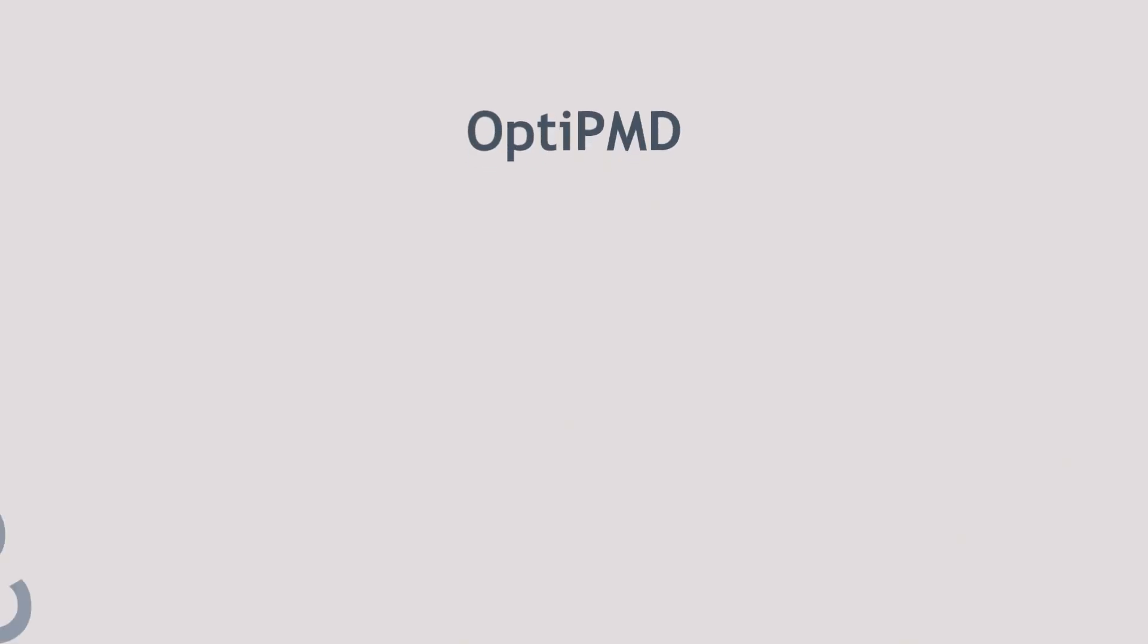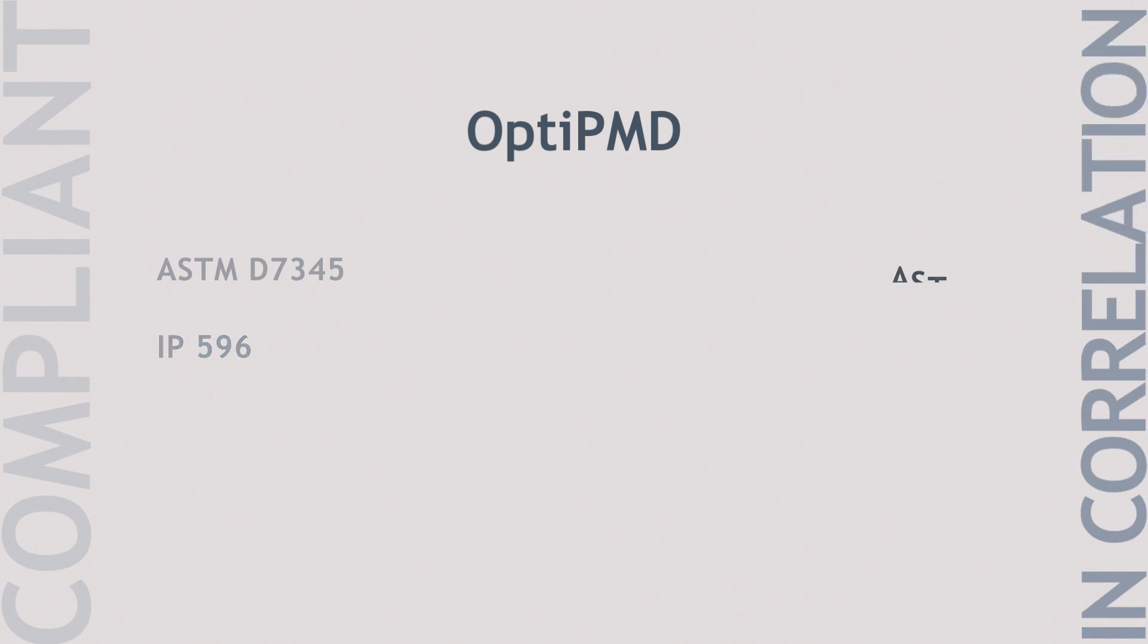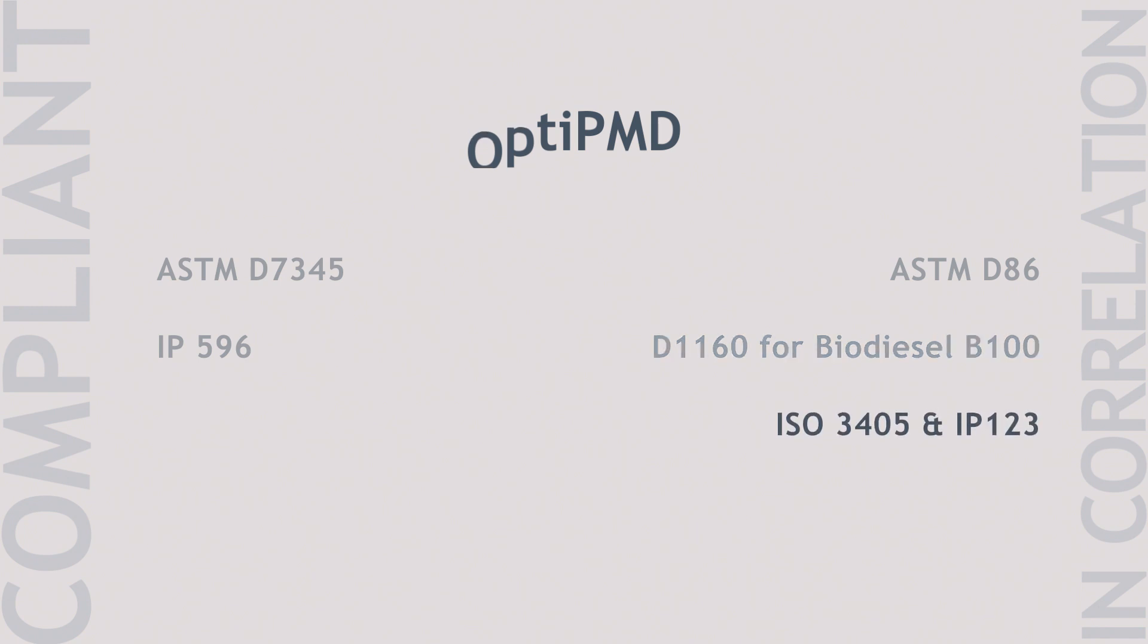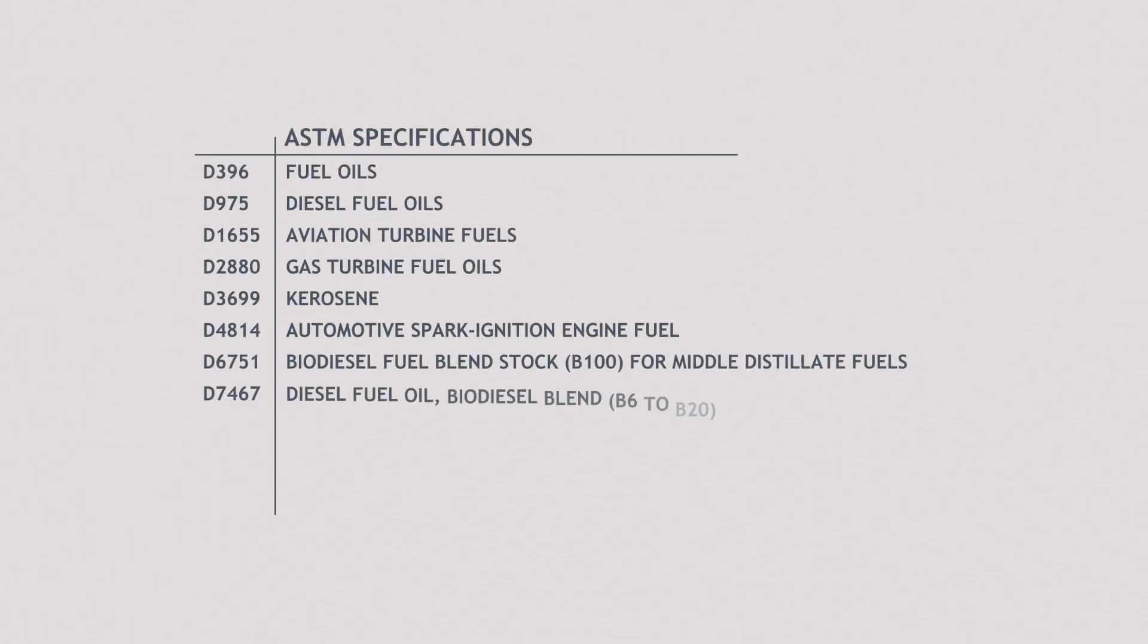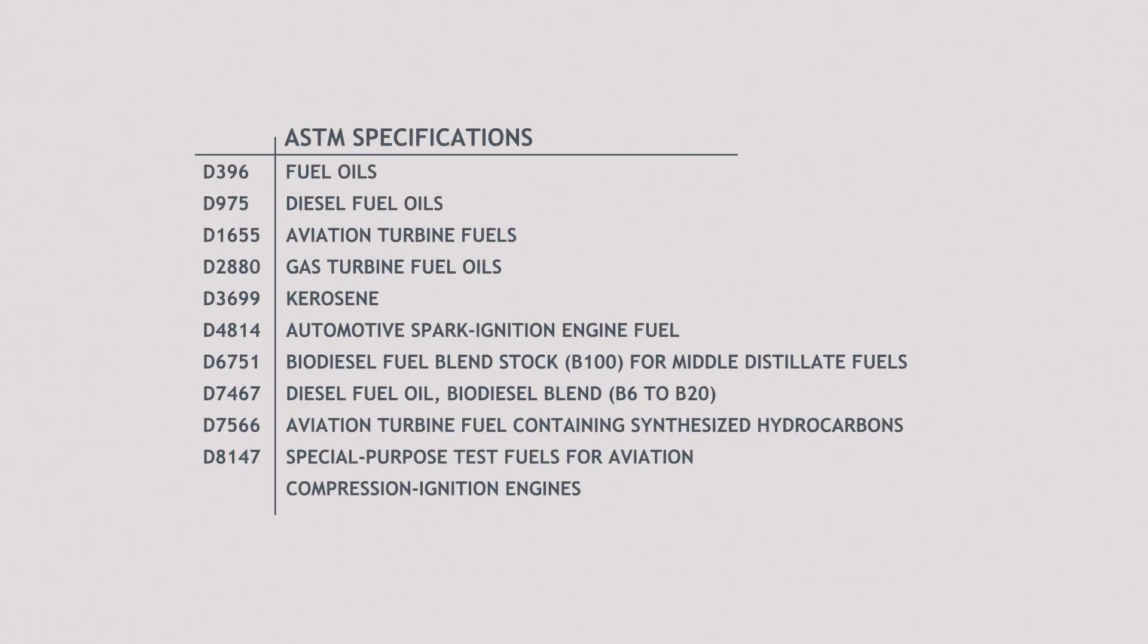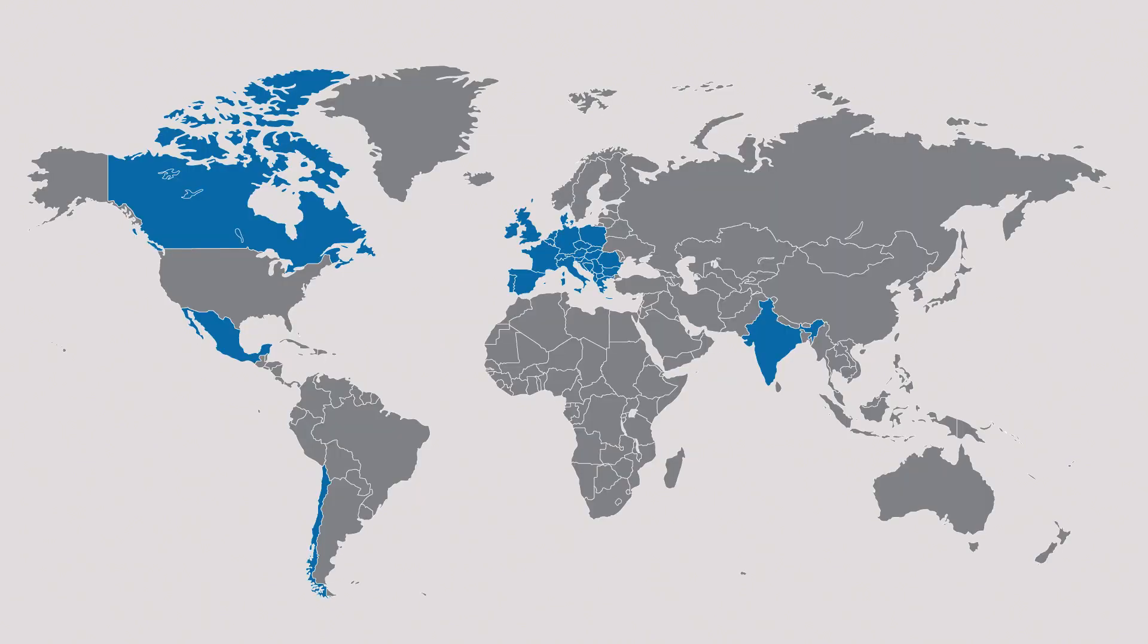OptiPMD is compliant with ASTM D7345, IP596, and in perfect correlation to ASTM D86, D1160 for biodiesel B100, ISO 3405, and IP123. It's also included in 10 ASTM fuel specifications as an alternative to D86 for product certification, and compliant with international fuel specs in Canada, Mexico, Chile, India, as well as DEFSTAN 91-91 for jet fuel.